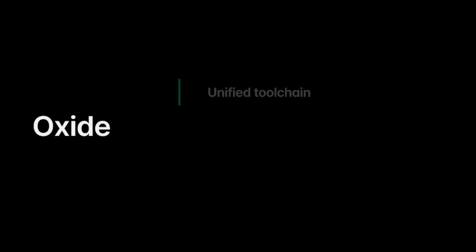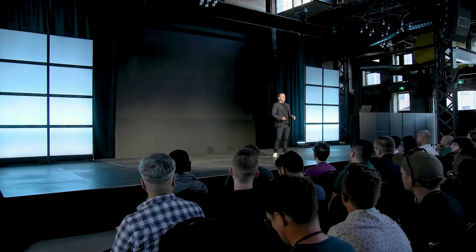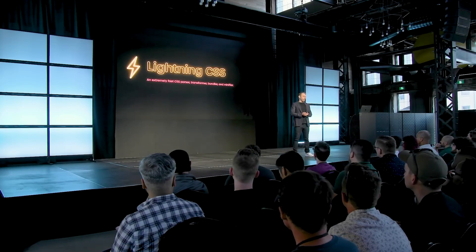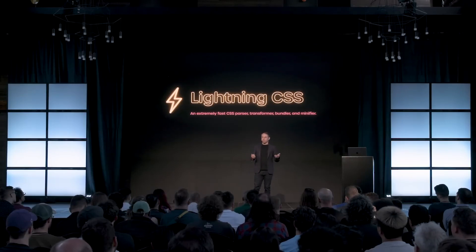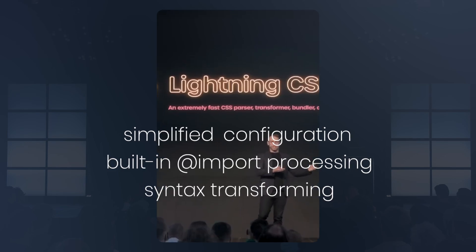The second important feature of the Oxide engine is its speed. The project build time has increased by more than two and a half times, from 330ms to 130ms — an incredibly good result. All of this became possible thanks to Lightning CSS, an extremely fast CSS parser, transformer, bundler, and minifier developed by Devin Govan. In addition to its incredible speed, Lightning CSS also provides simplified configuration, built-in at-import processing, syntax transforming, and more.